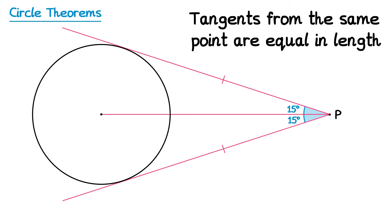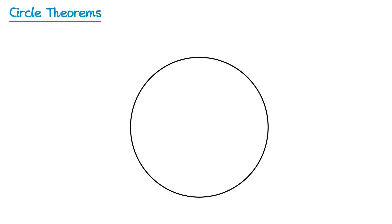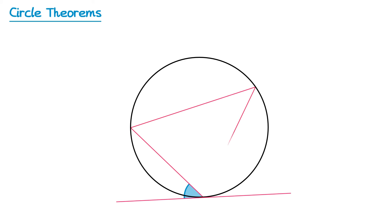Now we're going to move on to the final theorem. If we draw a tangent to the circle and then draw a chord from the point where the tangent touches the circle, we form an angle between them. Next we're going to use the chord to create an angle at the circumference, but not in the same segment — in the other segment. It turns out that the angle the tangent makes with the chord is equal to the angle the chord makes at the circumference in the opposite segment.